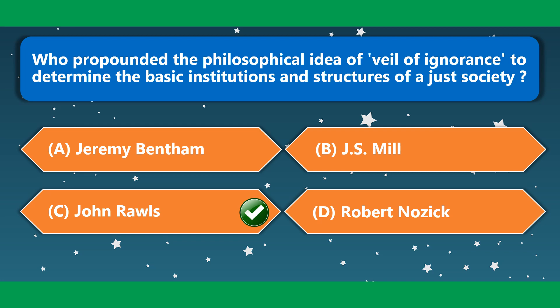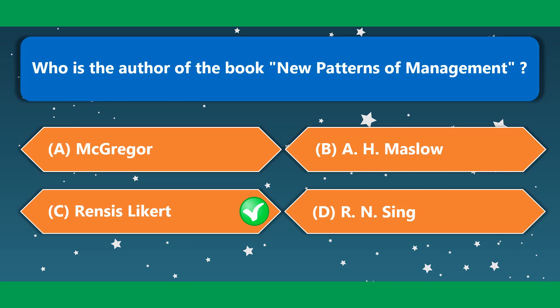Who propounded the philosophical idea of the veil of ignorance to determine the basic institutions and structures of a just society? It is John Rawls. Who is the author of the book 'New Patterns of Management'?